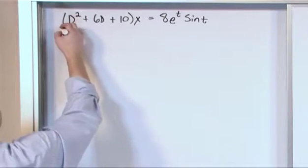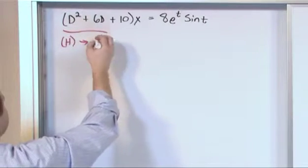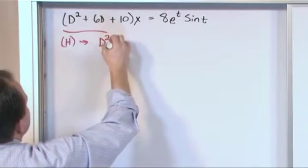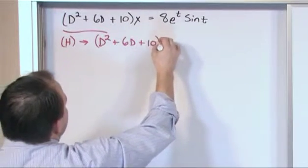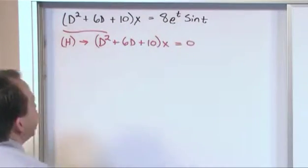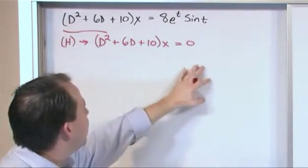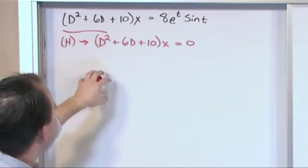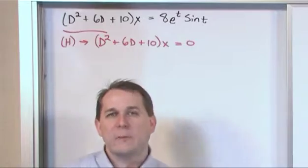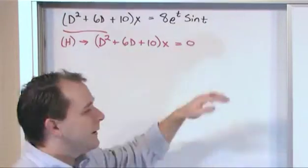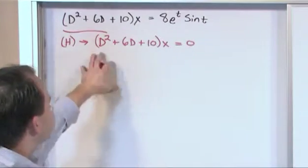But take it step by step. What we're going to do is form the homogeneous version, and that's going to be d squared plus 6d plus 10 operating on x equals 0. We just take the right hand side and throw it in the trash can. These coefficients and derivatives describe how the system is constructed. The right hand side describes what we're putting into the system as an input. So let's go ahead and do that.